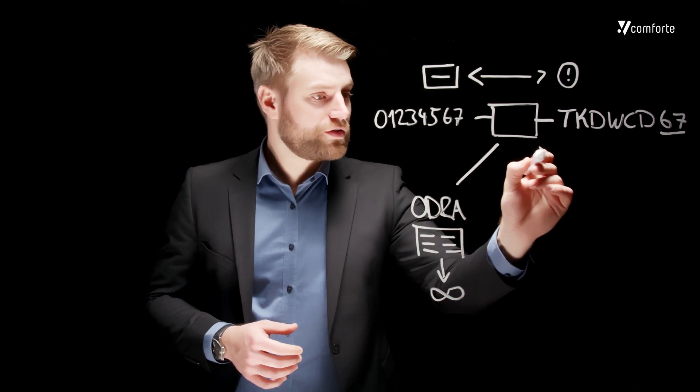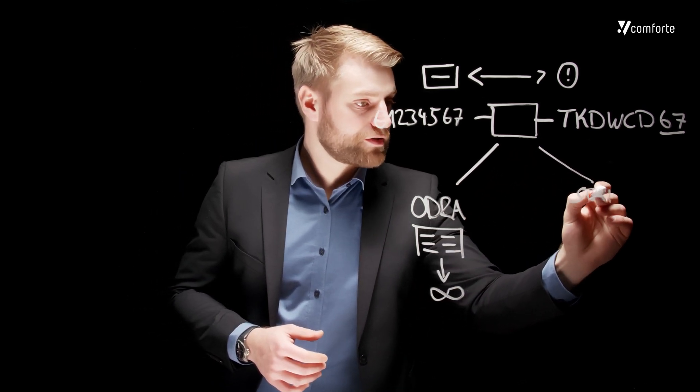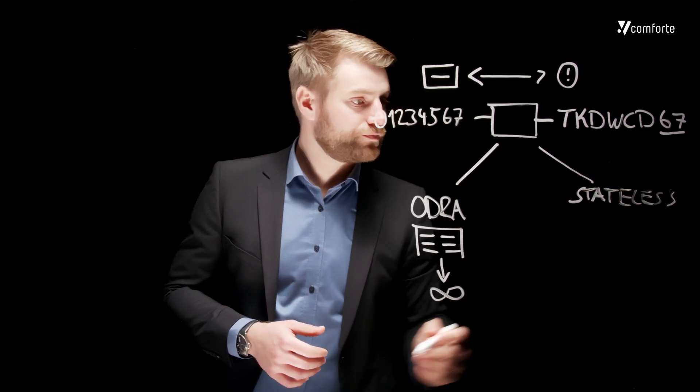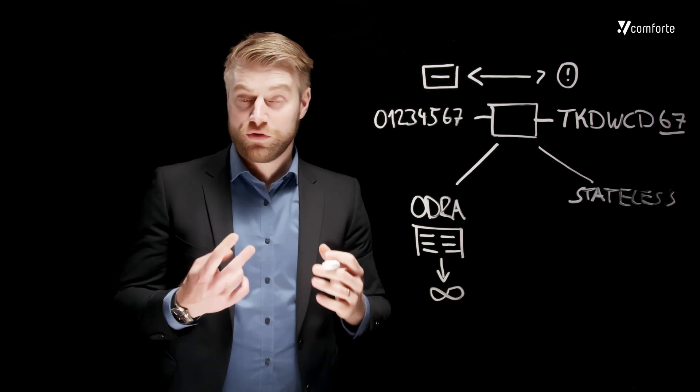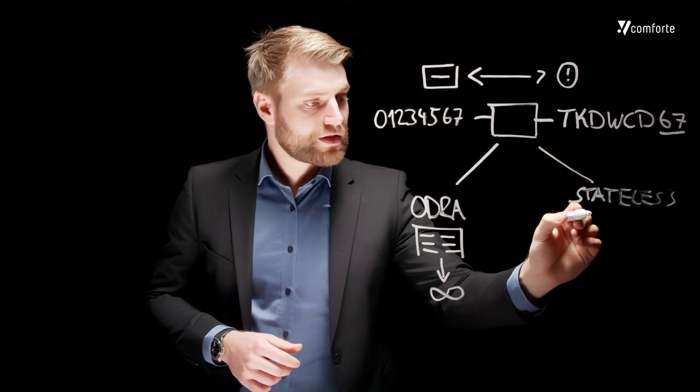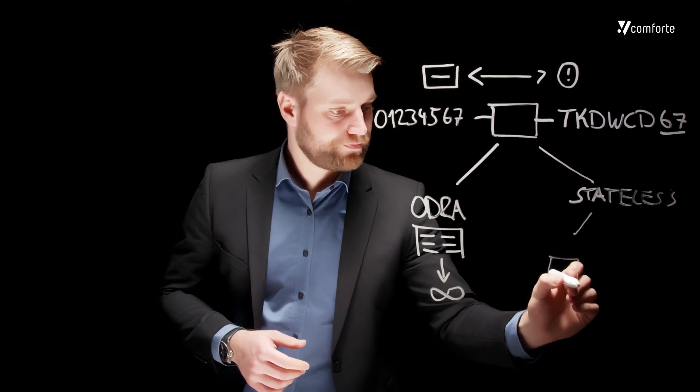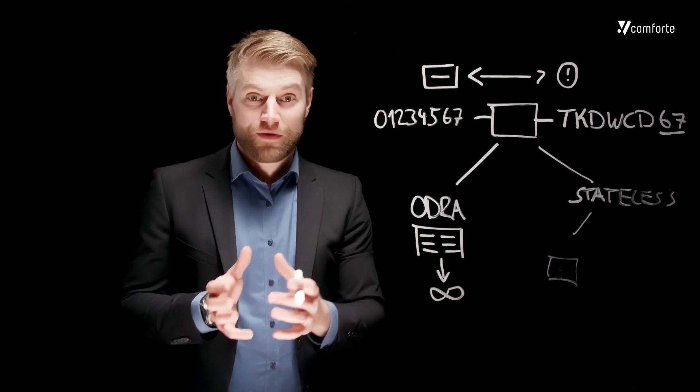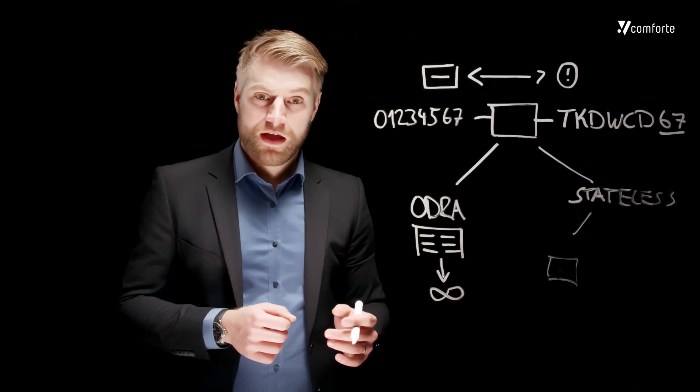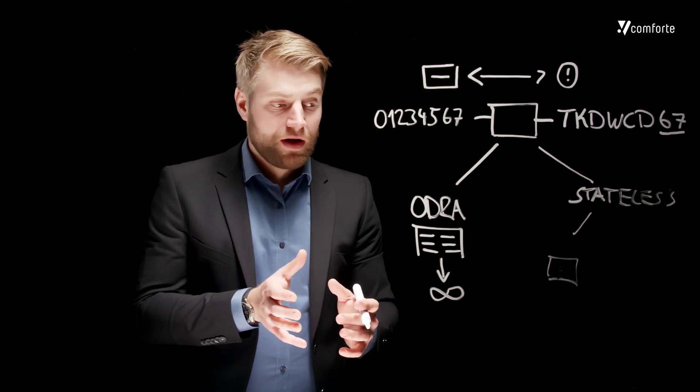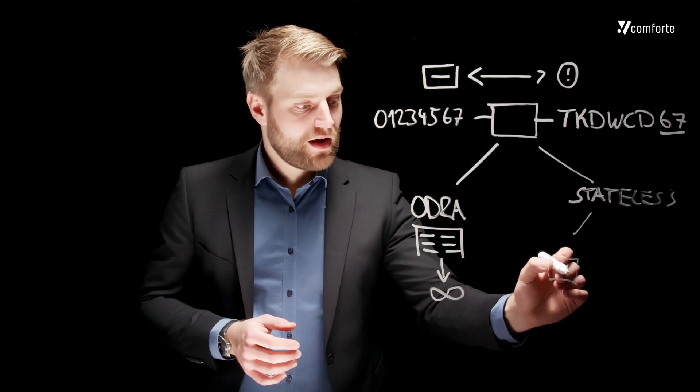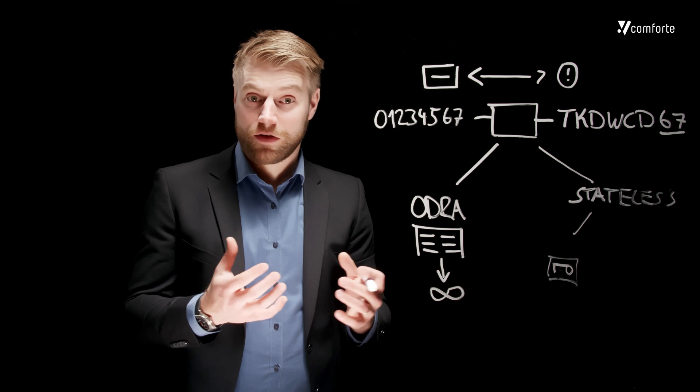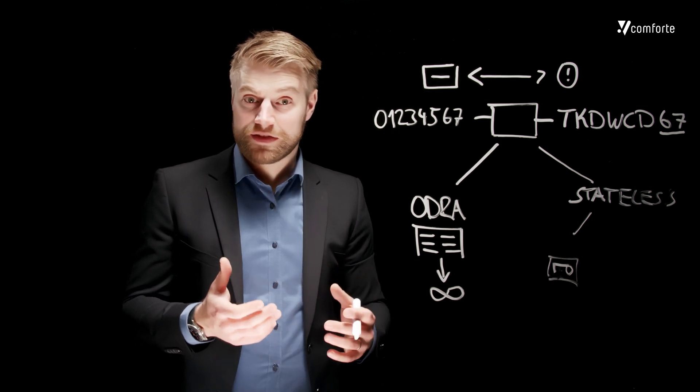Another option is to use a stateless tokenization scheme. So in a stateless tokenization scheme there are two different options. One option is to use a static table-based tokenization. A static table-based tokenization scheme uses an algorithm that runs on static predefined tables. And those tables do not hold any token mappings, but random values that basically are the secret of this algorithm. And as the table is static, it becomes a stateless tokenization scheme. And it's easy to distribute it to all instances.